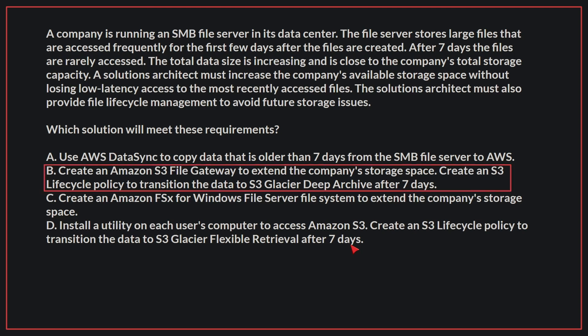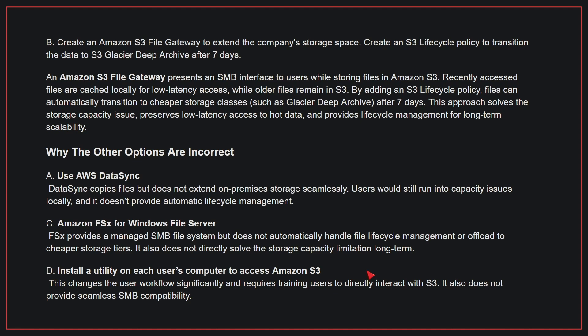The correct answer is B: Create an Amazon S3 file gateway to extend the company's storage space, and create an S3 lifecycle policy to transition the data to S3 Glacier Deep Archive after seven days. An Amazon S3 file gateway presents an SMB interface to users while storing files in Amazon S3. Recently accessed files are cached locally for low latency access, while older files remain in S3. By adding an S3 lifecycle policy, files can automatically transition to cheaper storage classes after seven days, solving the storage capacity issue and providing lifecycle management for long-term scalability.